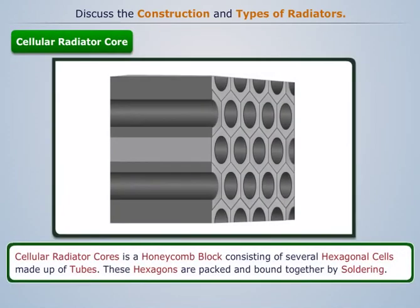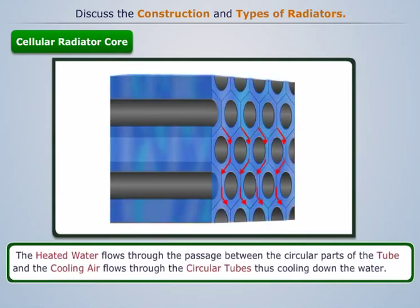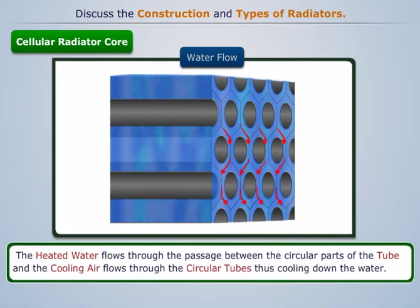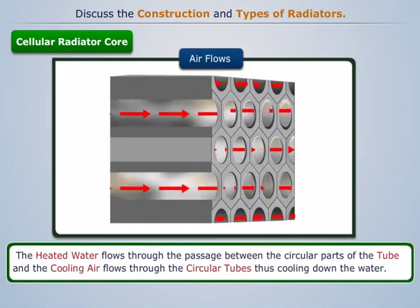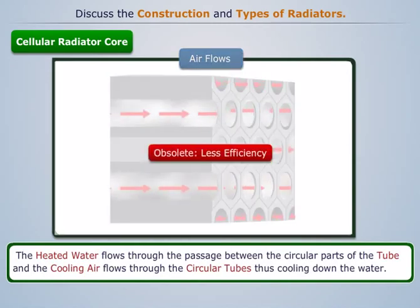The cellular radiator core is a honeycomb block consisting of several hexagonal cells made up of tubes. These hexagonal cells are packed and bound together by soldering. The heated water flows through the passage between the circular parts of the tube, and the cooling air flows through the circular tubes, thus cooling down the water. This type of radiator is now obsolete because of its less efficiency.